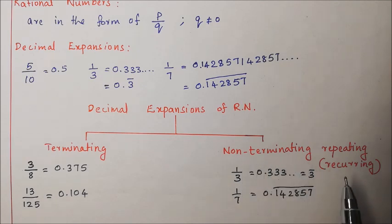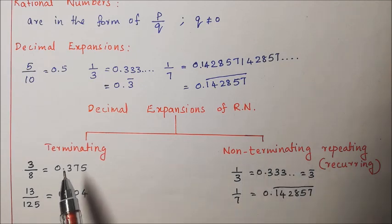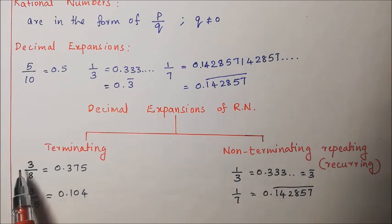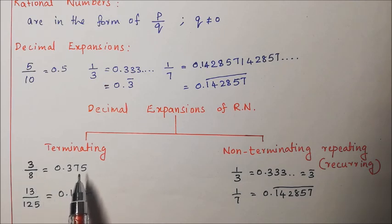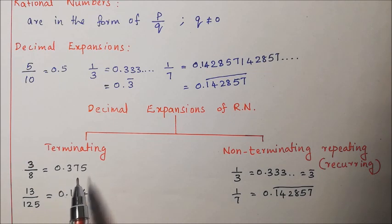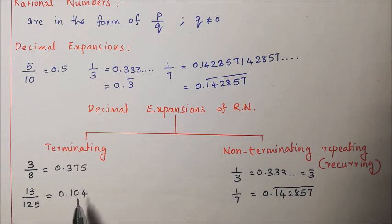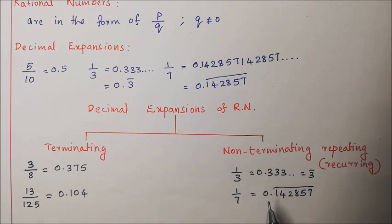Here are some examples. The rational number 3 by 8 gives 0.375, which is a terminating decimal expansion. And 13 by 125 gives 0.104, also a terminating decimal expansion. There are also examples of non-terminating repeating or recurring decimal expansions.